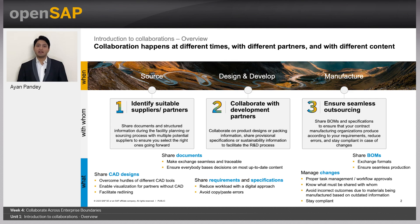To ensure you select the right ones going forward. In the next step, collaborate with development partners to work on product designs or packaging information, to share provisional specifications or sustainability information to facilitate the R&D processes. And finally, ensuring seamless outsourcing to share bill of materials and specifications so that your contract manufacturer organizations produce according to your requirements, reduce errors, and stay compliant in case of changes.